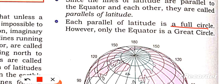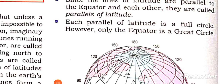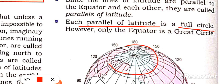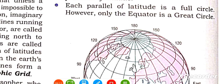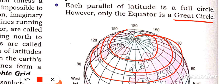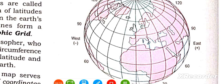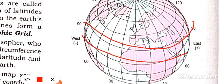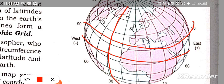In a 3D image of the Earth, one latitude line that starts at a point will go completely around — it will be a full circle. Latitudes are full circles while longitudes are semi-circles, and together they form the grid.